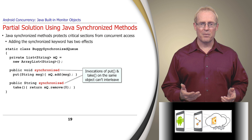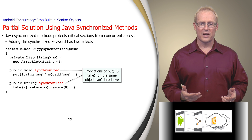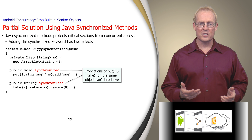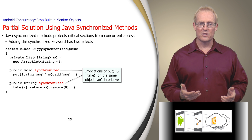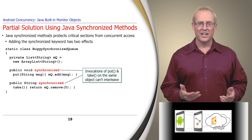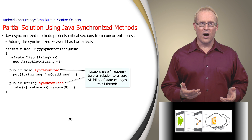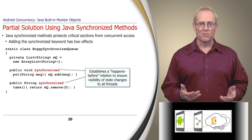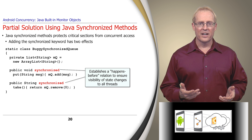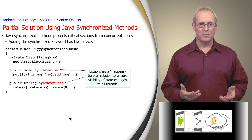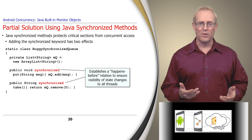First, it's not possible for two invocations of put and take on the same object to interleave. When one thread is executing a synchronized put method on an object, all other threads that invoke synchronized methods for the same object will block until the first thread is done with the object. Second, when a synchronized method exits, it automatically establishes a happens-before relationship with any subsequent invocation of a synchronized method for the same object, which ensures that changes to the state of the object are visible to all threads.